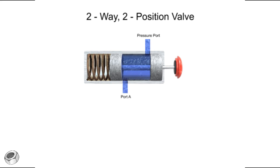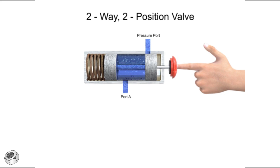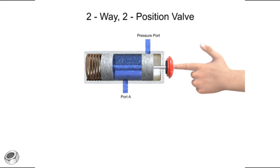This spool valve has two ports and two positions. The first position allows fluid to flow freely. The second position blocks both ports. Even though both ports aren't physically blocked, the lack of fluid entering the pressure port also prevents fluid from exiting outlet port A. Therefore, both ports are defined as blocked, making it a two-way, two-position valve.